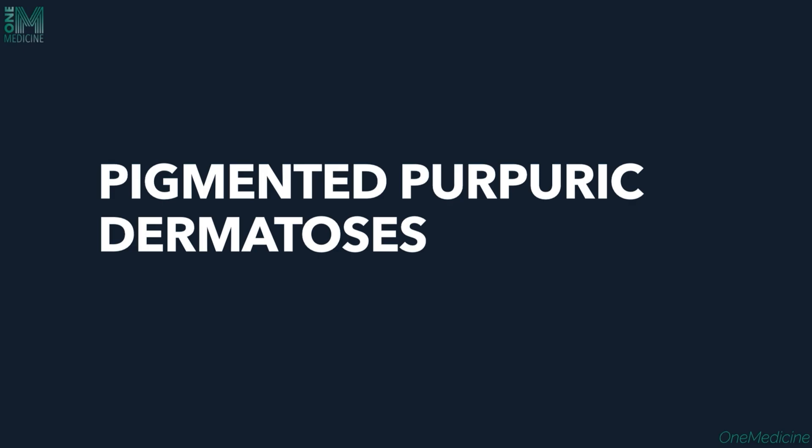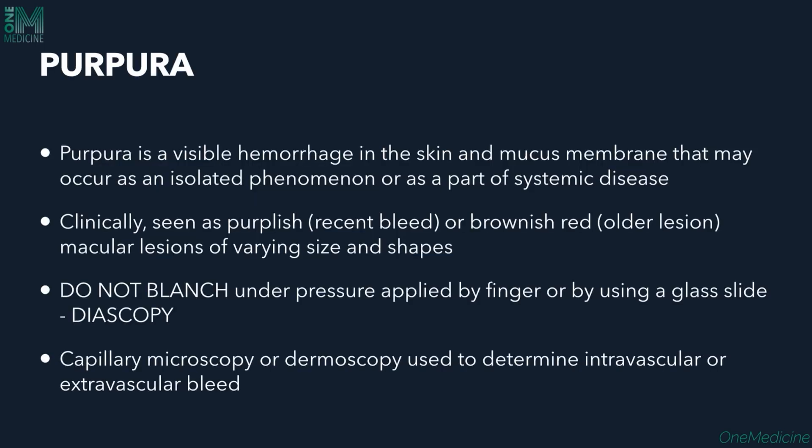Welcome to One Medicine. Today I'll discuss a purpuric condition called Pigmented Purpuric Dermatosis. As the name indicates, it's a purpuric disorder with pigmentation in the skin. Before going into what exactly is Pigmented Purpuric Dermatosis — also called PPD in short — let us understand what purpura is.